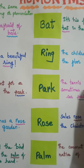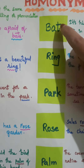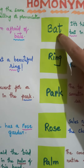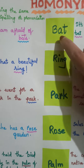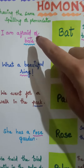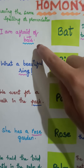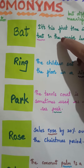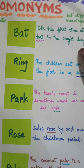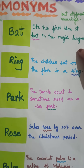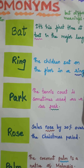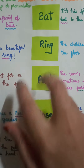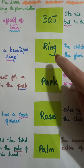As you can see here, 'bat' has the same spelling and pronunciation, but there are two meanings. One is 'I am afraid of bats,' and the other meaning is 'it's his first time at bat in the major leagues.' So as you can see, there are different meanings for the same word.